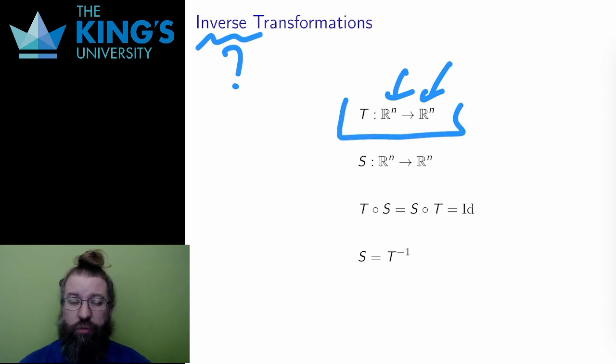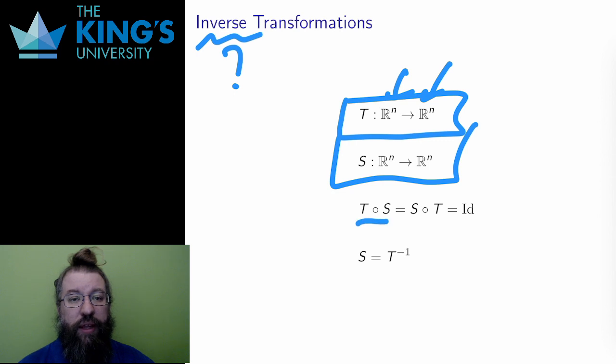So, say I have a transformation T from R^n to R^n. Say there is another transformation S, also from R^n to R^n. And if I compose to make the identity transformation in both orders, T composed with S and S composed with T, then S is the inverse transformation of T.